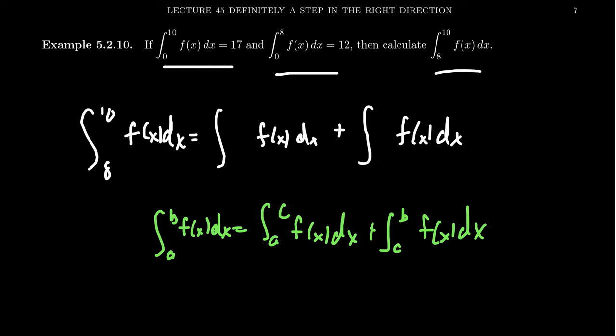This time around, we actually would want to do 8 to 0 and then 0 to 10. So here we're using these values where 8 was the original value a, 10 was the original value b, and then we're introducing this extra term c right here.